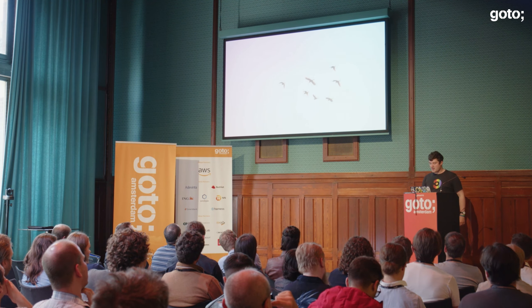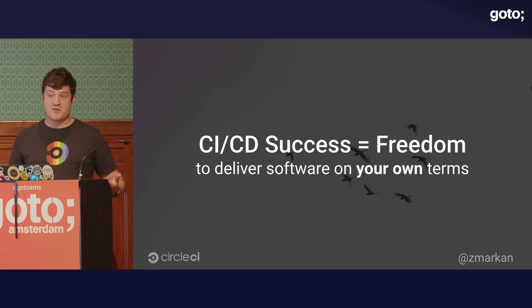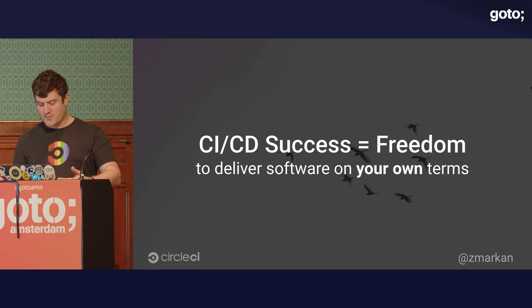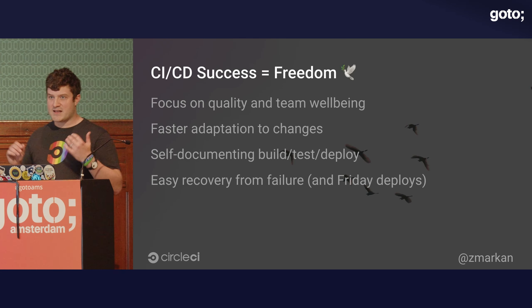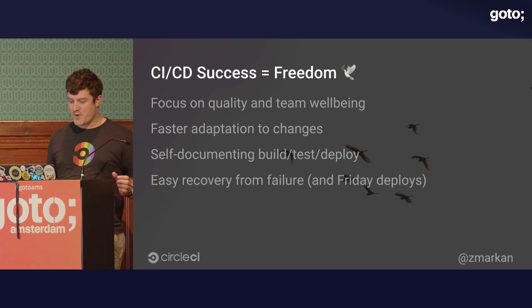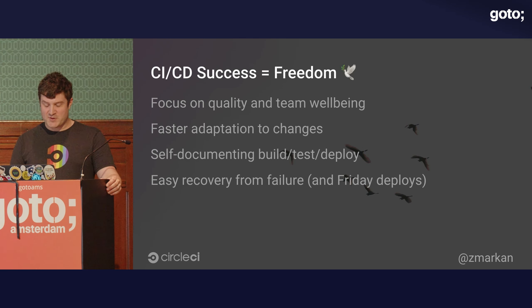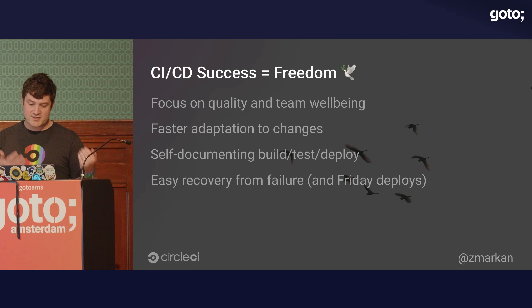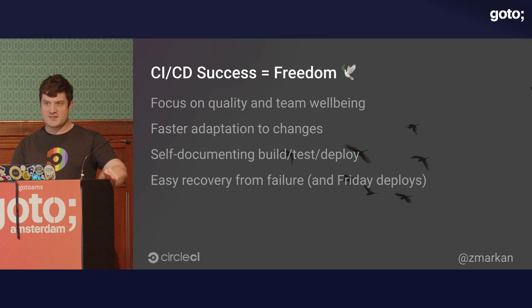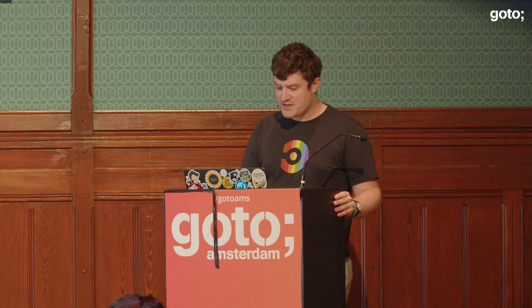Which ultimately brings me to my final point: CI/CD success is all about being free to deliver the software you're working on, on the terms that you control, that work for you as a developer, for your team, for your organization. It lets you focus on quality because you're automating all your tests. It benefits team well-being because they don't have to toil away on automatable processes. It allows your organization to ship smaller things so you can adapt to changes faster. You have this self-documenting process for deployment and testing. And of course, you can deploy on Fridays and recover quite easily. Anyway, this has been some practical tips and tricks for CI/CD success.